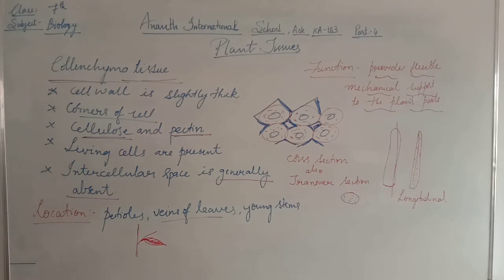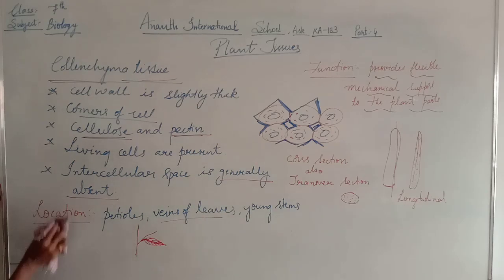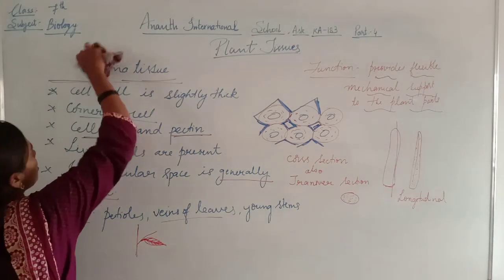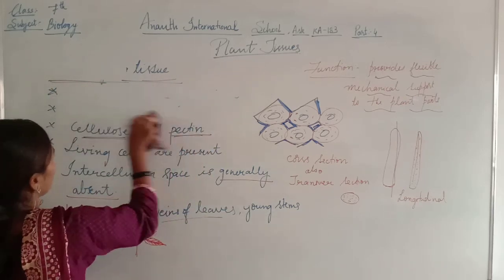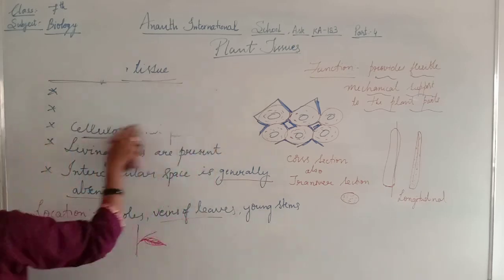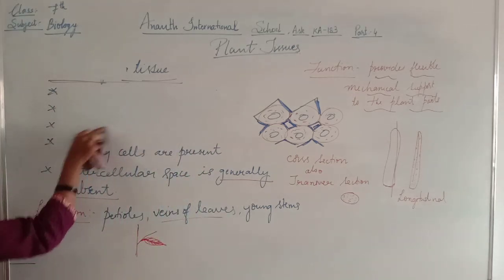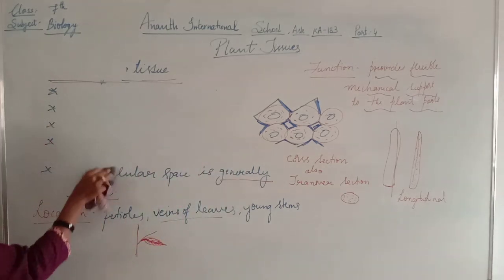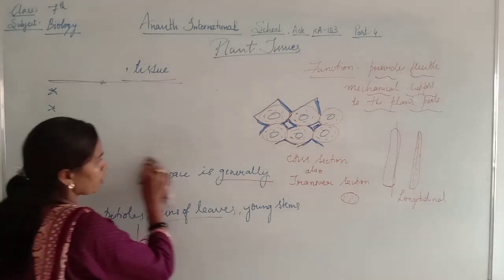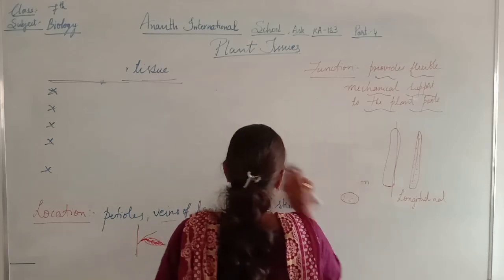Now we shall move to the third type of supporting tissue, which is sclerenchyma tissue. Sclerenchyma comes under supporting tissue, which comes under simple tissue. Simple tissue is divided into protective tissue and supporting tissue. Supporting tissue is divided into three types: parenchyma, collenchyma, and sclerenchyma. Now we shall study sclerenchyma tissue.